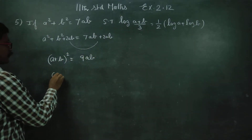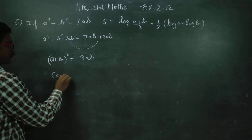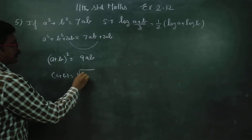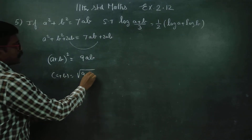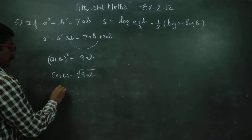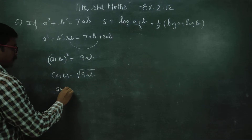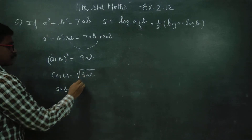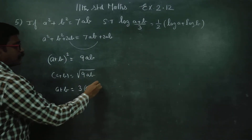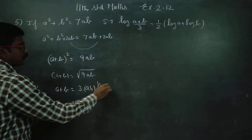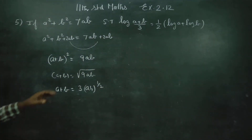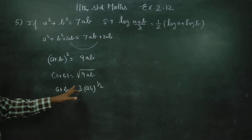Taking the square root of 9ab, a plus b is equal to 9ab to the power 1 by 2, giving plus or minus 3 root ab.